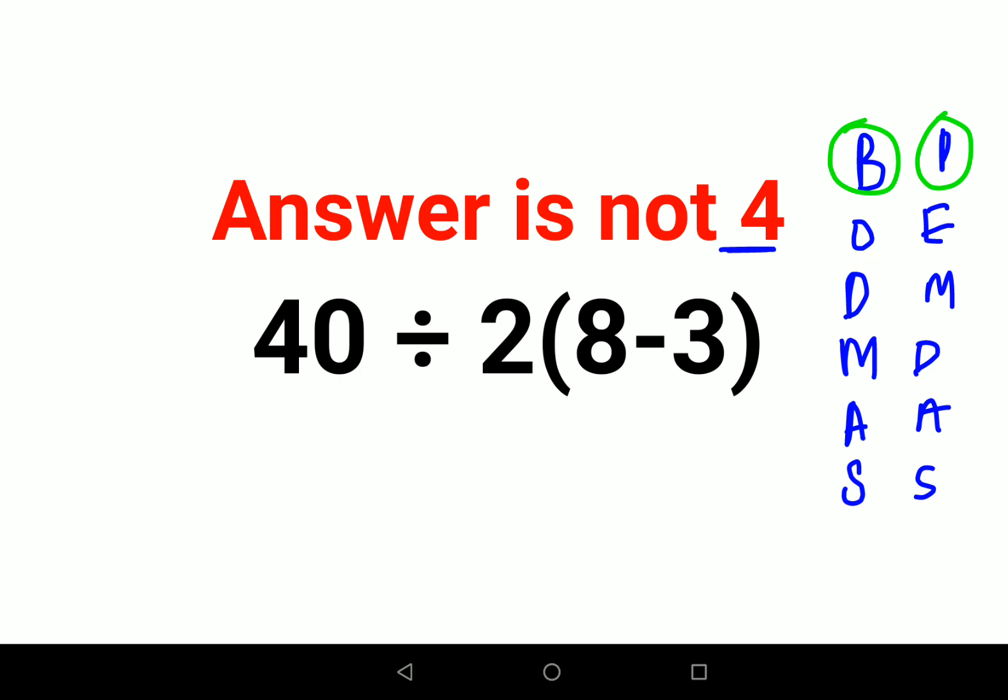So here in this situation we will first do the brackets. So we keep the rest of the fraction number, the question as it is, and we'll do 40 divided by 2, and then see there is no sign between the number and the bracket over here so it's obviously multiplication.